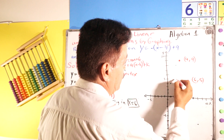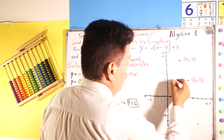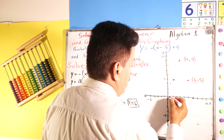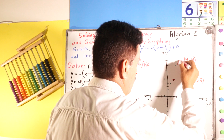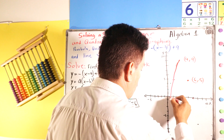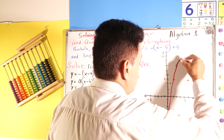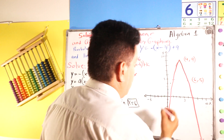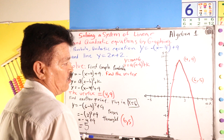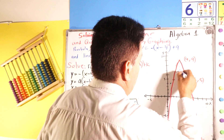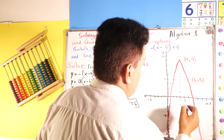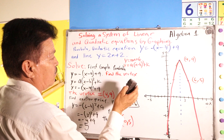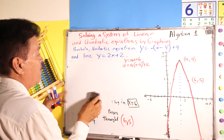Another point is (2, 5) by symmetry — since the vertex is at x equals 4, the point x equals 6 has a mirror point at x equals 2 with the same y-value of 5. With these points, we can sketch the parabola through the vertex (4,9) and the points (6,5) and (2,5).